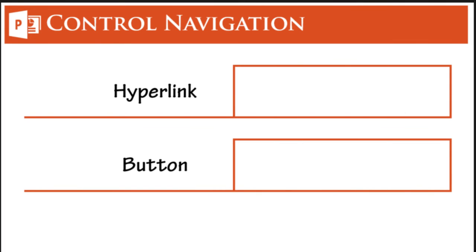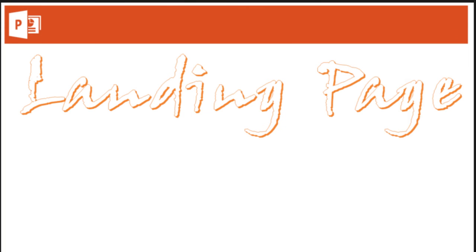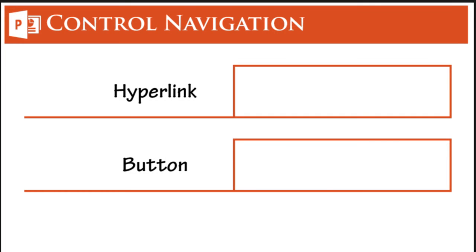Now let's look at controlling navigation — how the presentation moves from one slide to another in presentation mode. You can go to the next slide with a mouse click, spacebar, right arrow, or Page Down. But we want the user to move to the next slide only when we want, not when they press any of those keys. To stop that, we need to use kiosk mode.